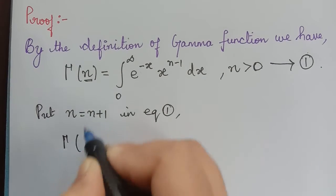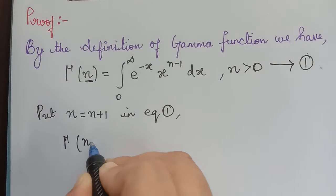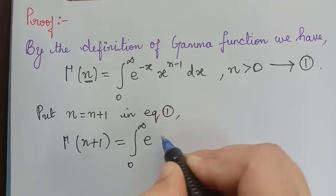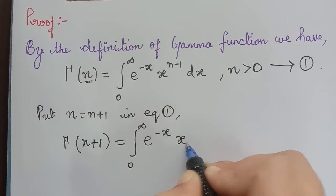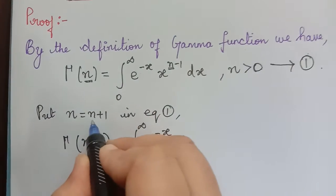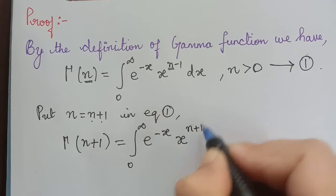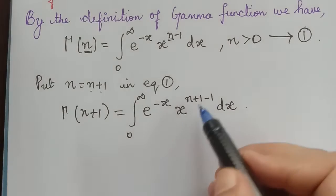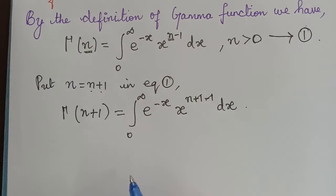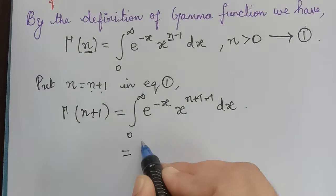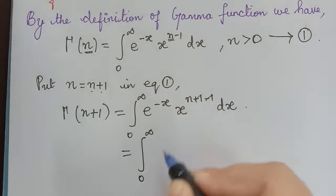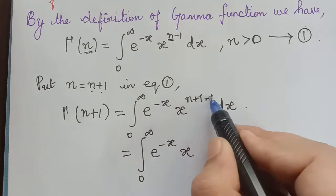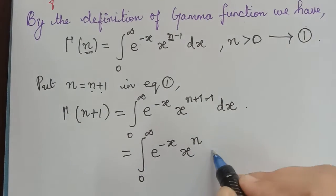If we put n equal to n plus 1 in equation 1, we get gamma of n plus 1 equal to the integral from 0 to infinity of e to the power negative x, x to the power n plus 1 minus 1, dx. The plus 1 and minus 1 cancel, so this integral becomes the integral from 0 to infinity of e to the power negative x, x to the power n, dx.